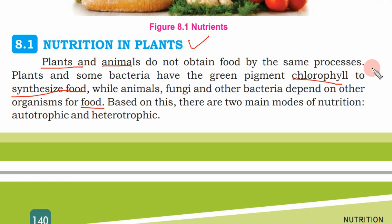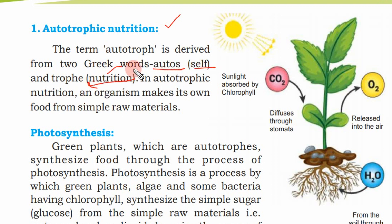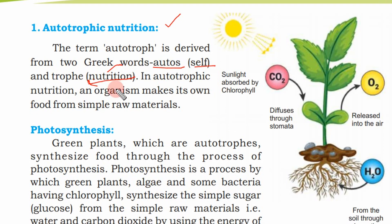Here we have autotrophic nutrition. The term autotroph is derived from two Greek words: 'autos,' which means self, and 'troph,' which means nutrition — meaning self-nutrition. In autotrophic nutrition, an organism makes its own food from simple raw materials.